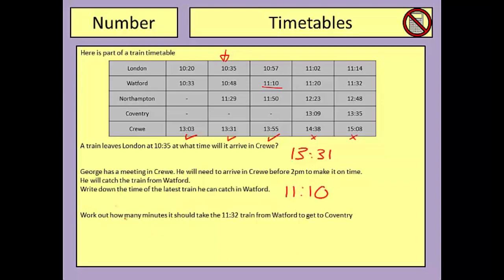In the third part we need to work out how many minutes it should take the 11.32 train from Watford to get to Coventry. So let's find that one first. The 11.32 train is here and we're going to see how long it takes to get into Coventry. I need to work out the difference in time between 11.32 and 13.35.